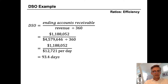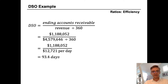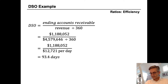So ending accounts receivable is our numerator. The denominator is 4.579 billion of revenue divided by 360 days, which gets us 12.7 million dollars per day. So we take 1.188 billion dollars divided by 12.7 million dollars per day and we get a DSO, or Days Sales Outstanding, of 93.4 days.